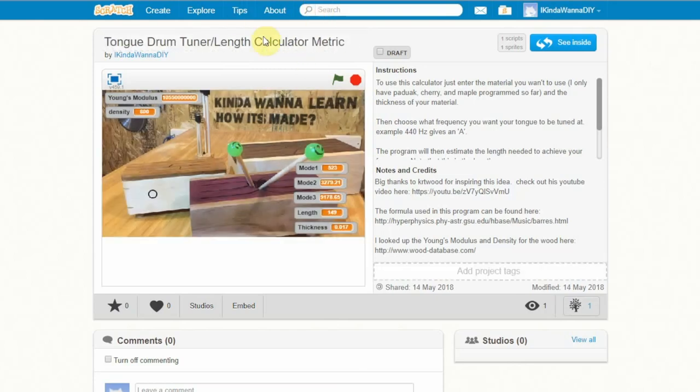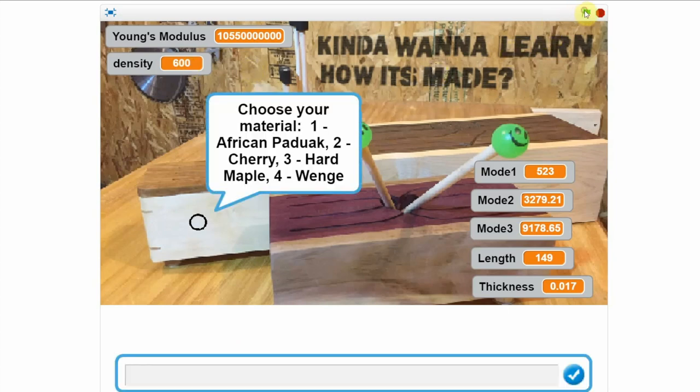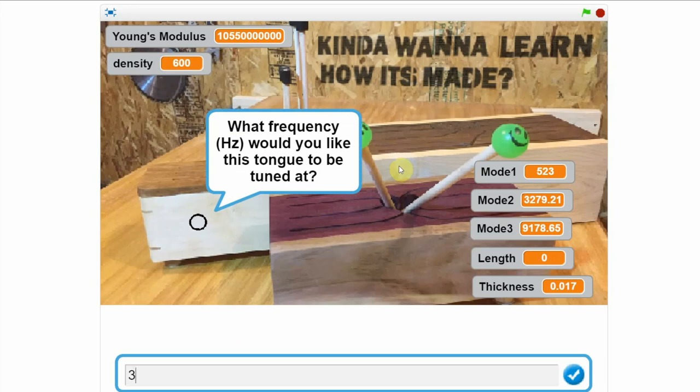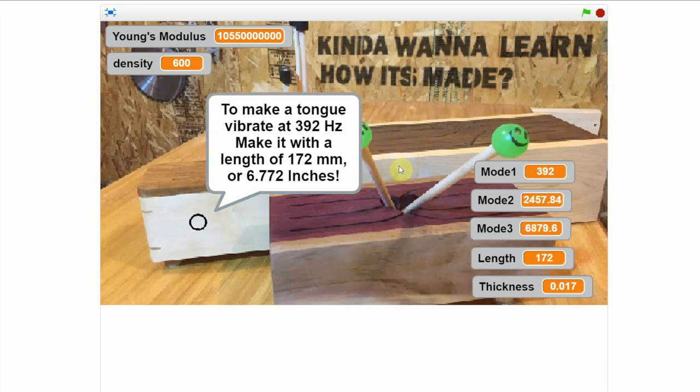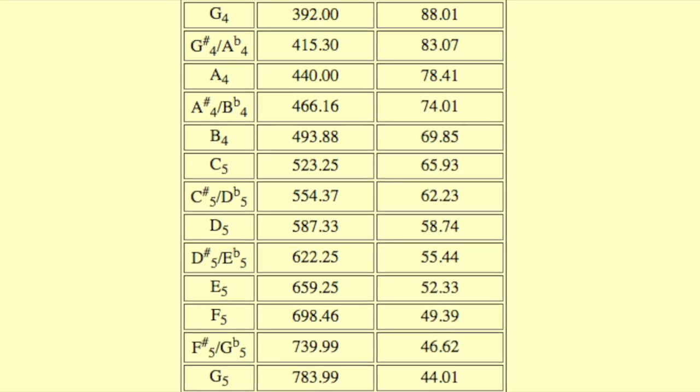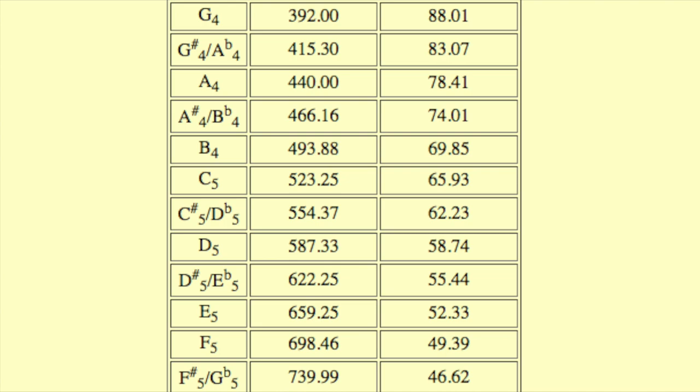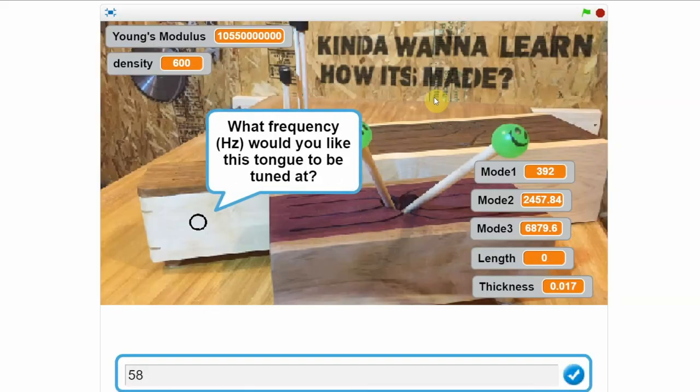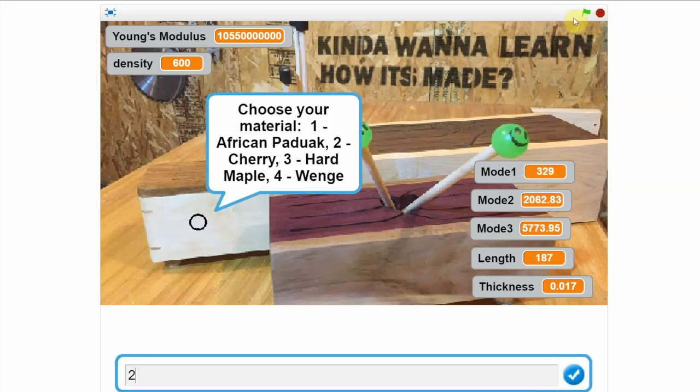You can choose to work in inches, however I found for this particular project the metric system works best. All you need to do is select the material you're using, enter the thickness, and choose the frequency you want to tune your tongue to. You can look up the frequency for musical notes with a quick Google search. Then, just repeat the process for each tongue and use the calculations to lay out a pattern for your drum.